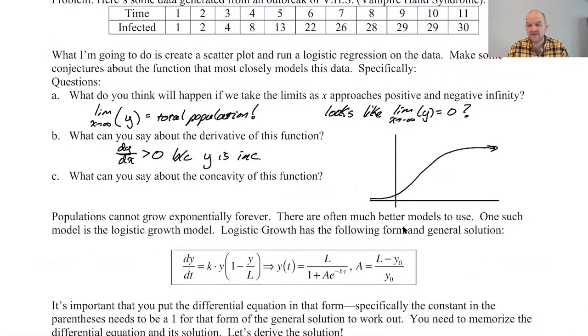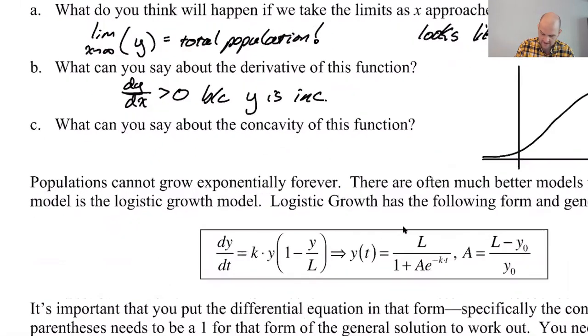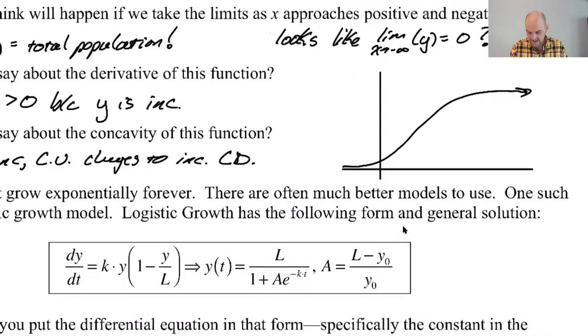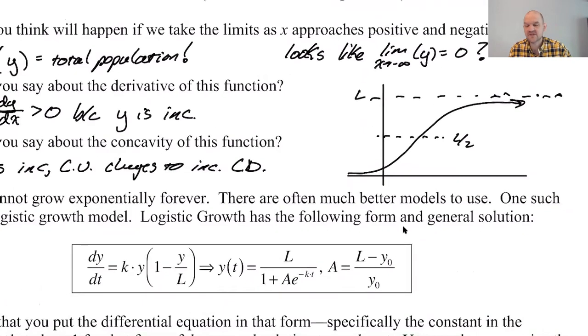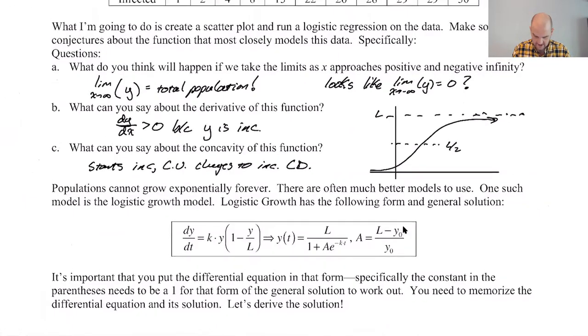But initially, and we saw this when we did the activity, initially it's kind of growing exponentially, and then it kind of tapers off. So I think what we can say is that it starts off increasing concave up and changes to increasing concave down. That seems to be what has happened there. And we think that it seems like it happens at, if this is L, it looks to me like at L over 2 is about where that happens, and we're going to find out that that actually is mathematically where that's going to happen. But this is an introduction to this.